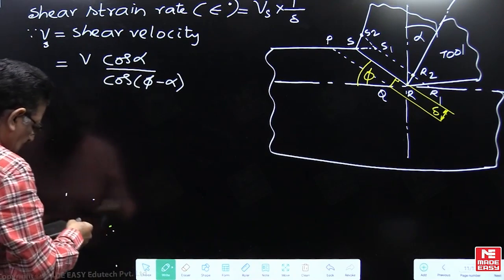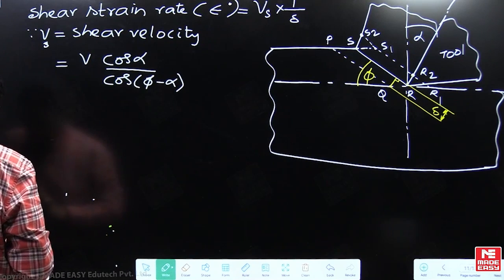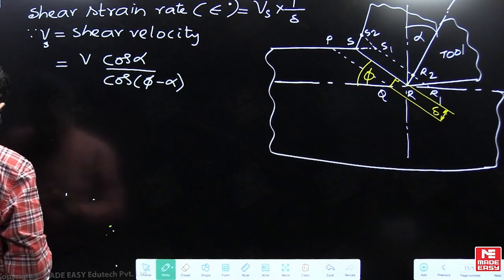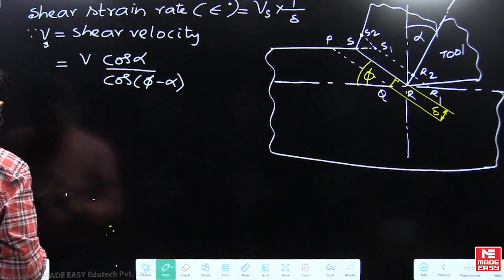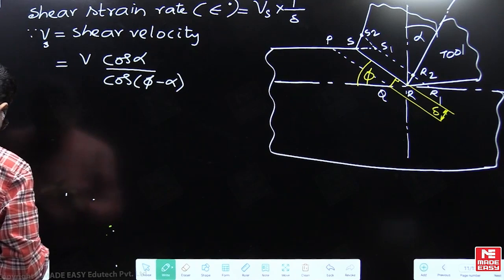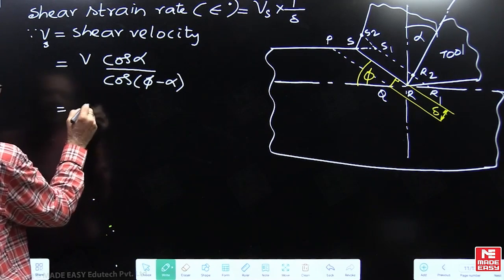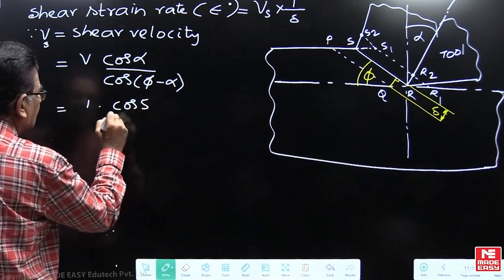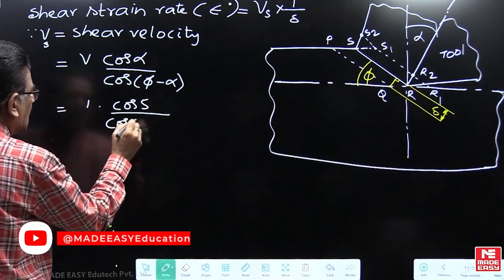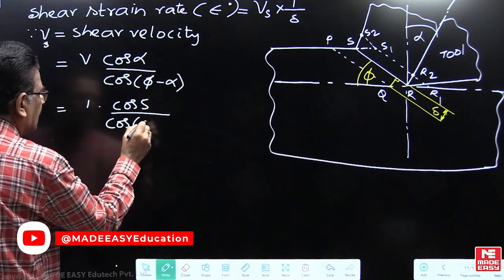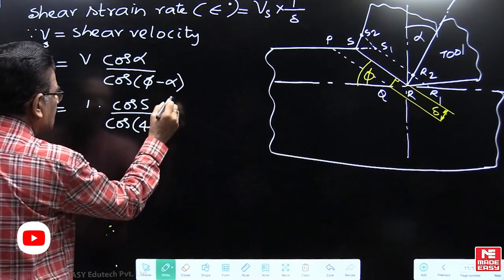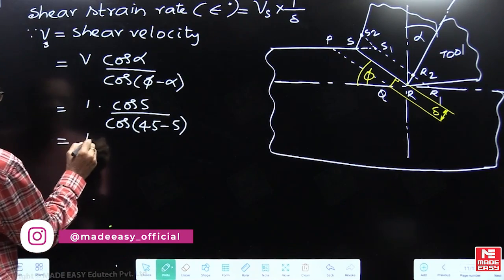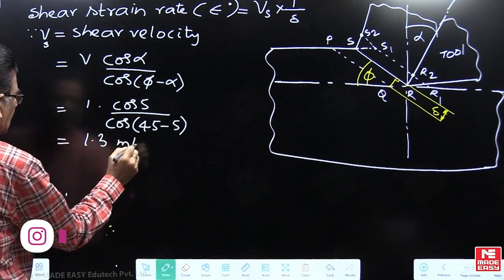We can substitute the values that are given in the model. V is given as 1 meter per second into cos alpha, rake angle is given as 5 degrees, divided by cos phi, the shear angle given as 45 degrees, minus alpha is 5 degrees. If you make this evaluation, this gives you the answer as 1.3 meters per second.